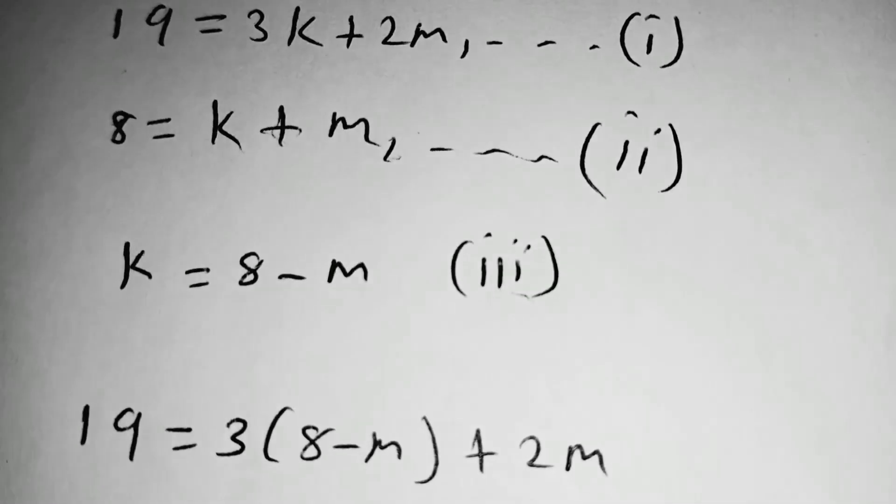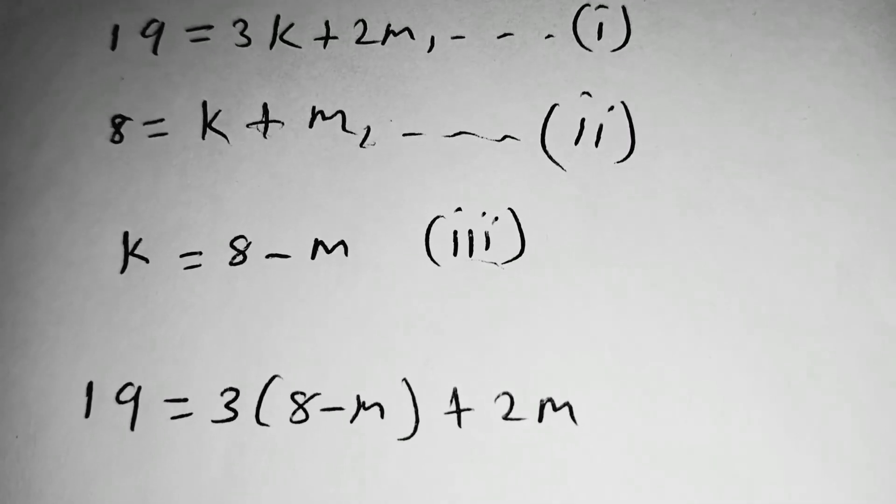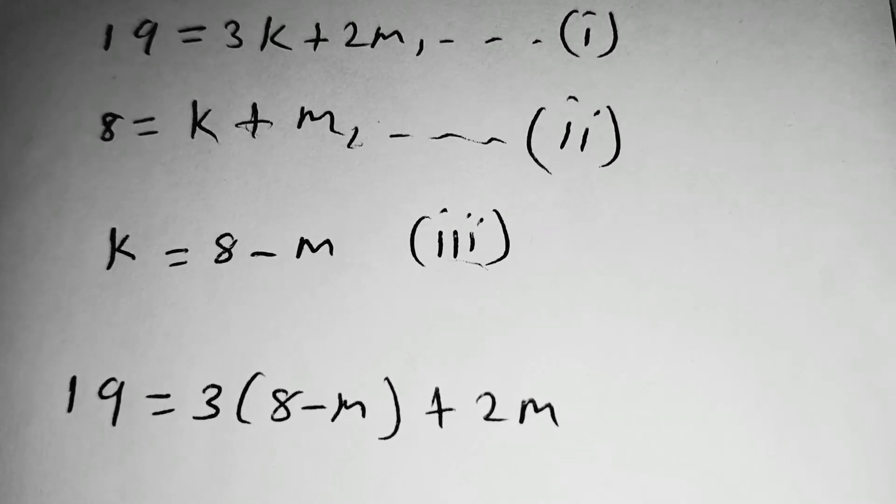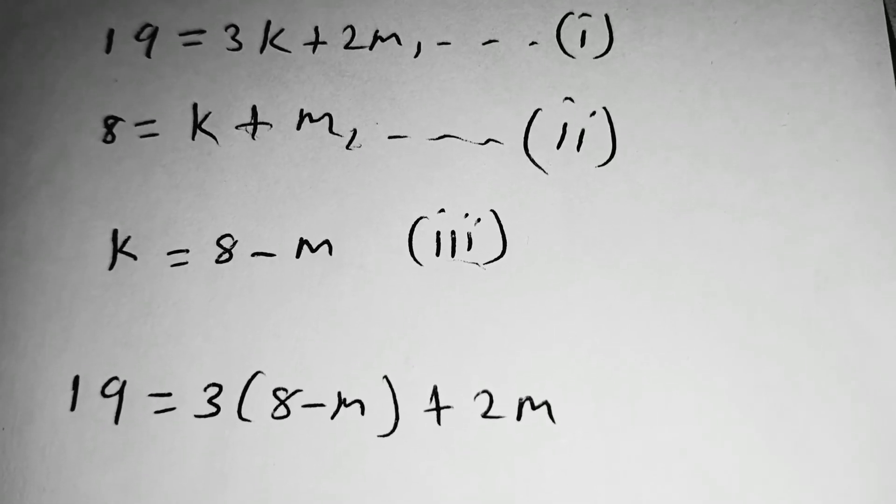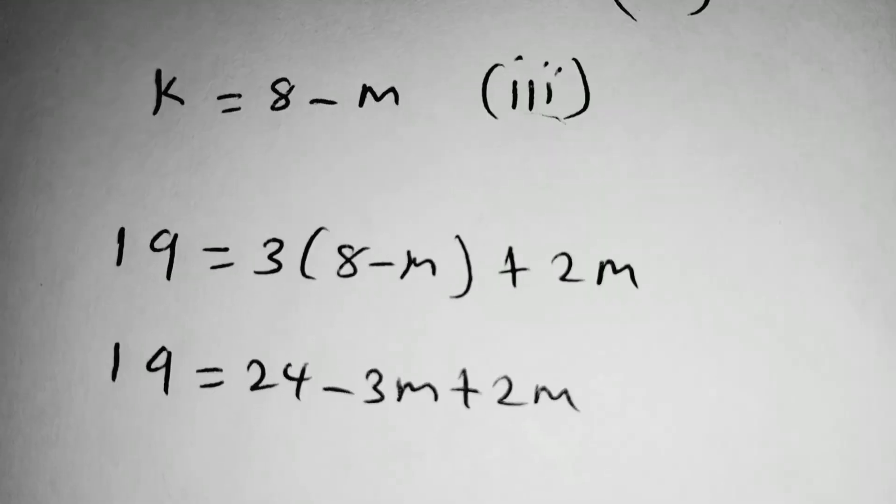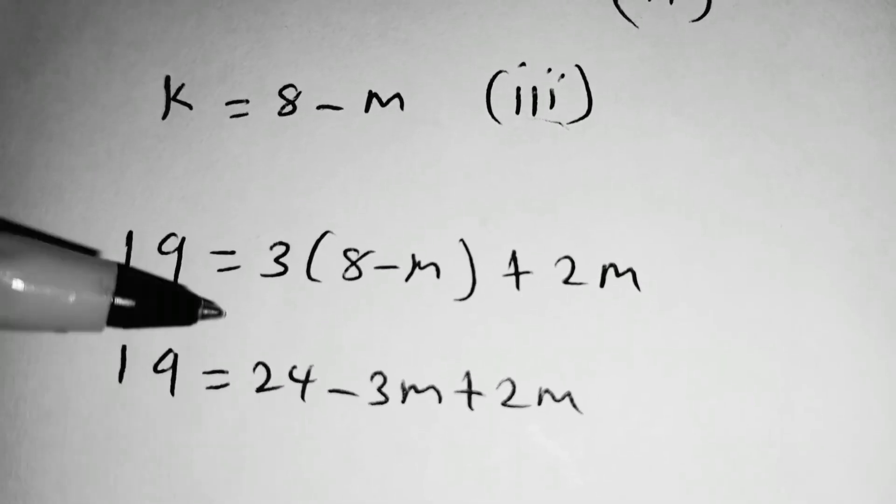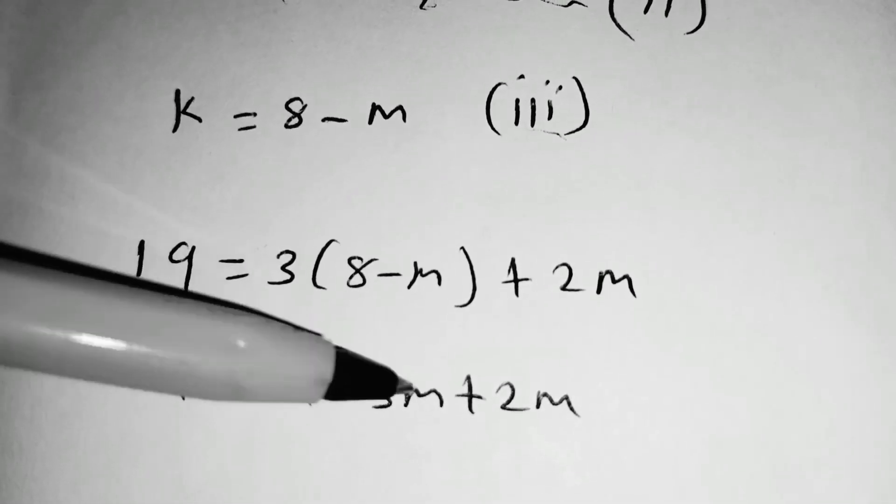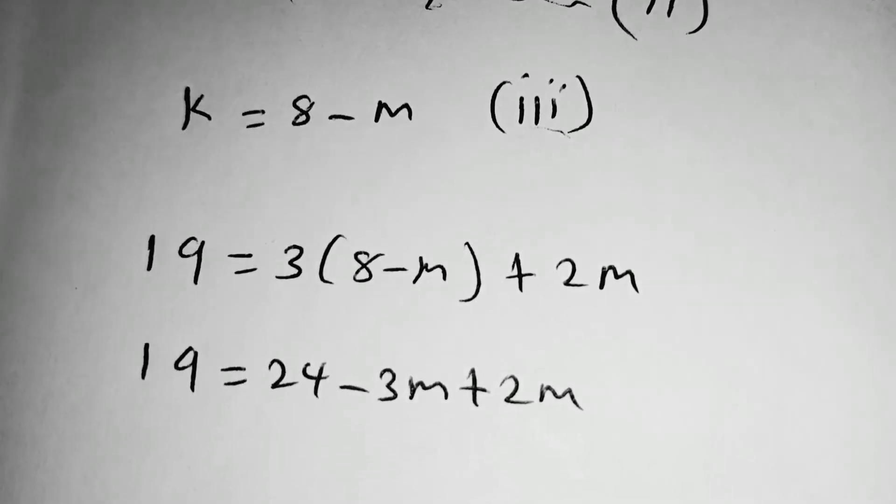So, substituting the value of K in equation 1, we obtain 19 is equal to 3K. Instead of K, we write 8 minus M plus 2M. So, removing the bracket, you have 3 times 8 is 24, 3 multiplied by negative M is negative 3M. So, negative 3M plus 2M will be negative M.